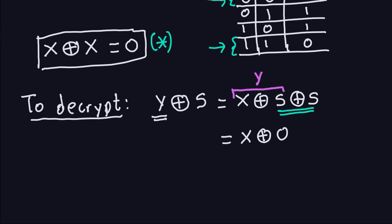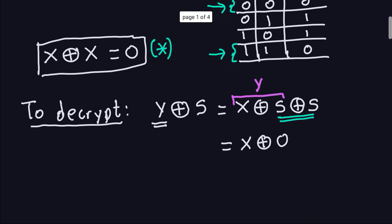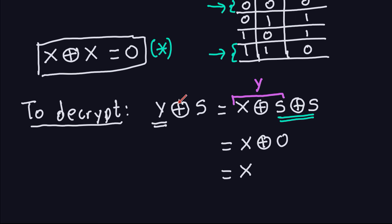What is anything XOR zero? It keeps the same value. So if I XOR X with zero — if X is zero and I XOR it with zero, it gives me zero; if X is one and I XOR it with zero, it gives me one. So it's giving me the same X. This is going to give me X. That's the reason why when you decrypt, the only thing you have to do is XOR with S again, because the S's cancel out, giving zero. XOR with zero has the same property as adding zero in real numbers — the value doesn't change.